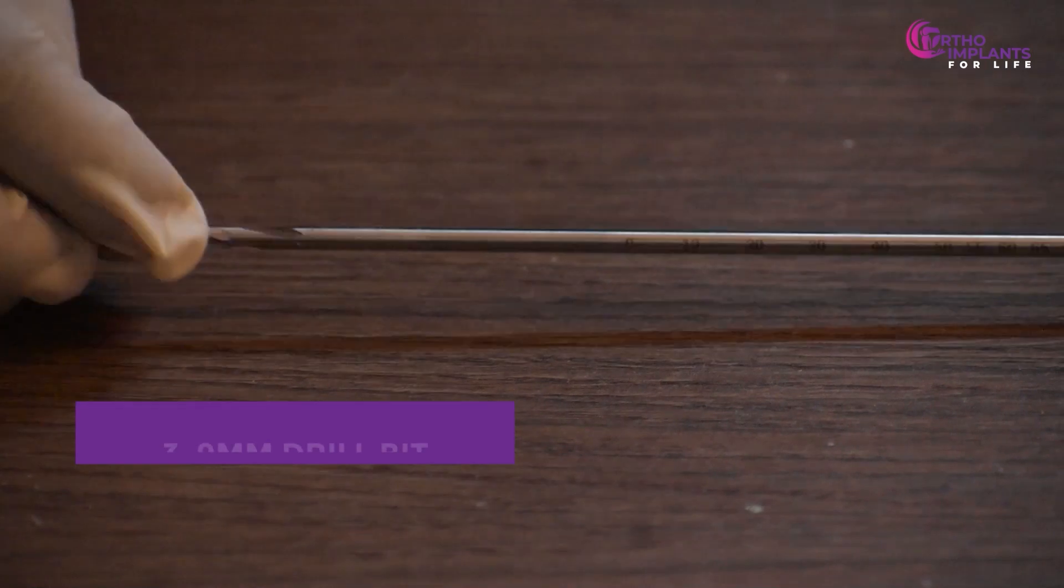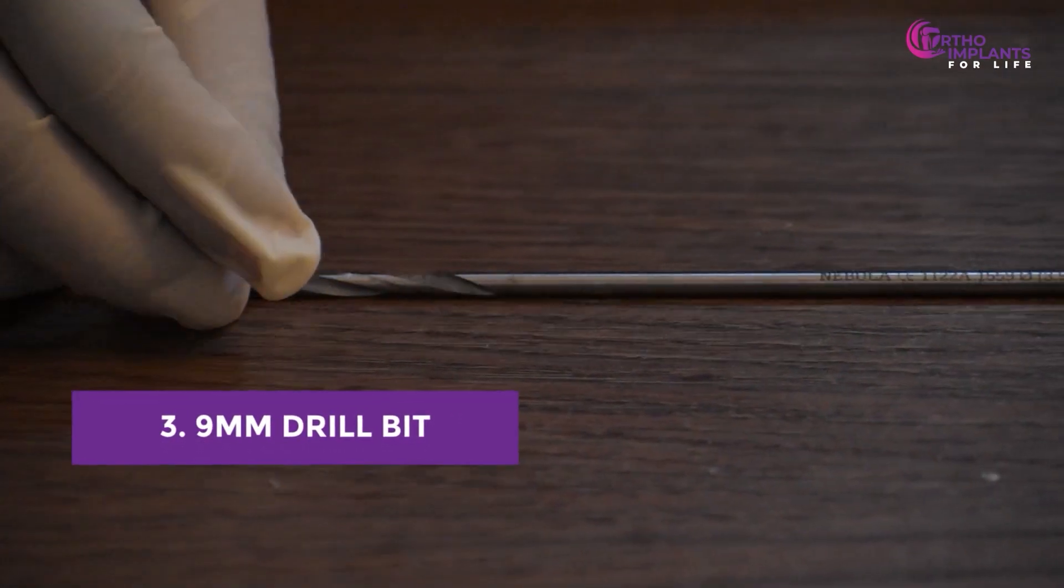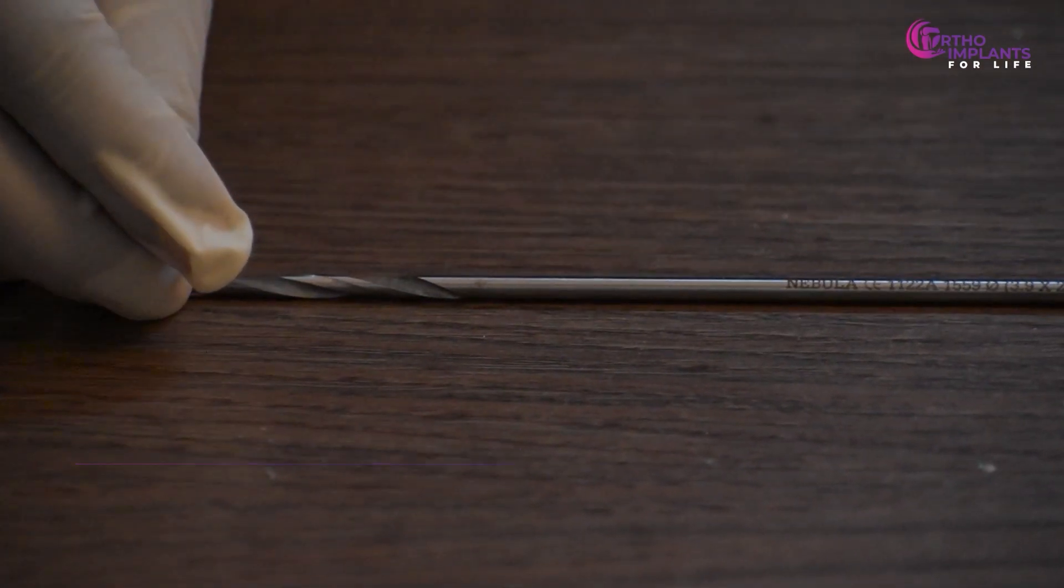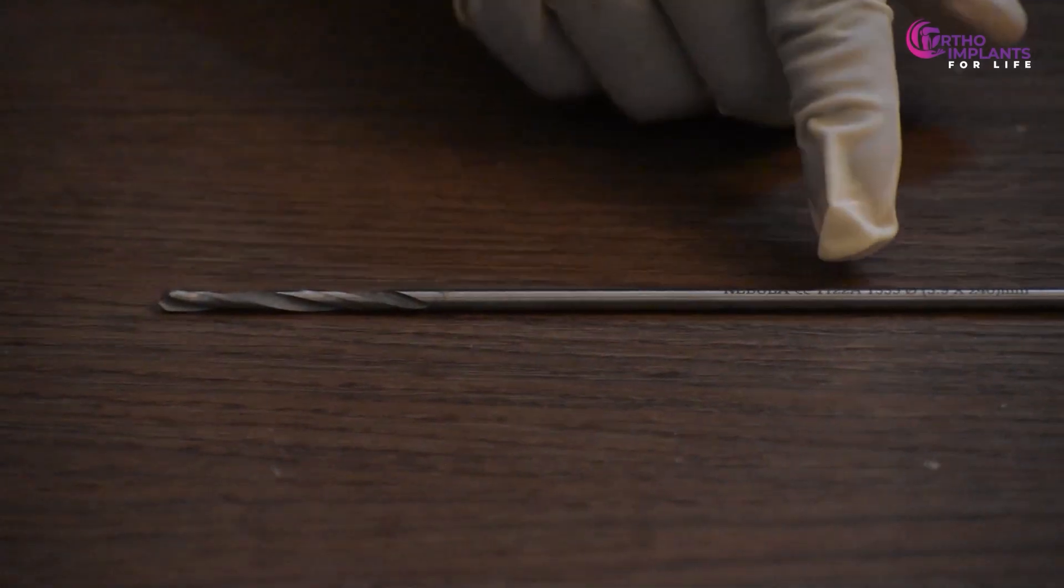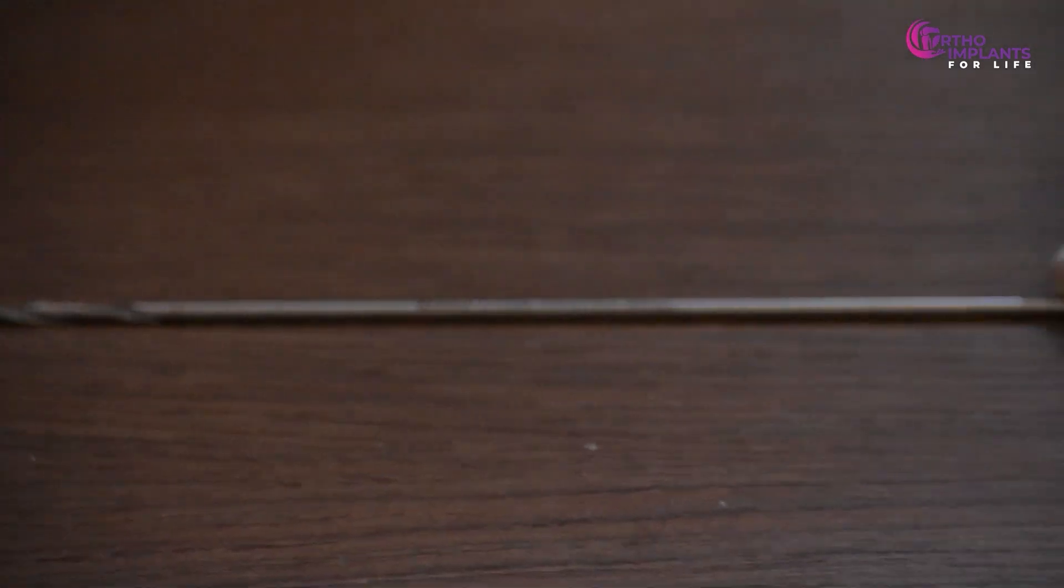Moving on, we have the 3.9 mm drill bit, used specifically for the 5 mm locking plates.